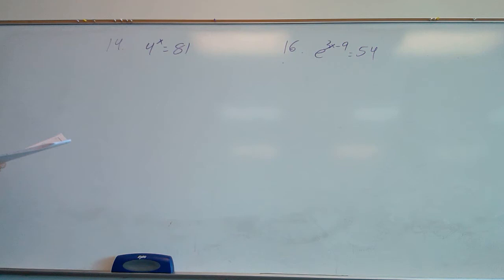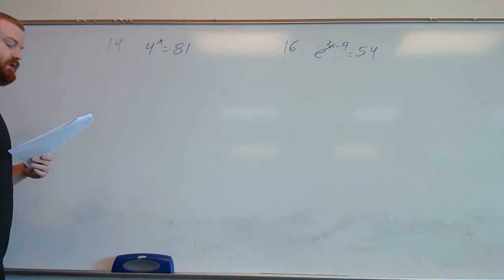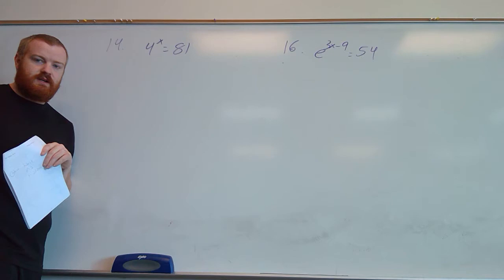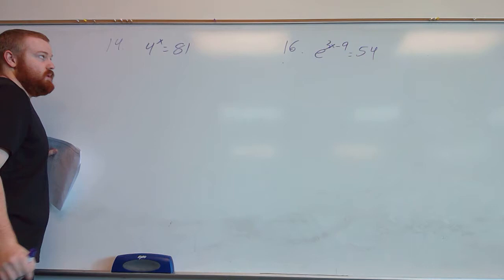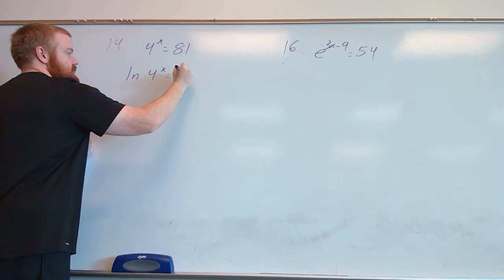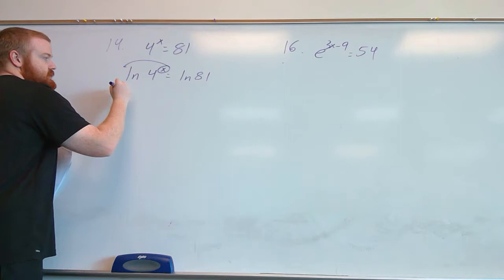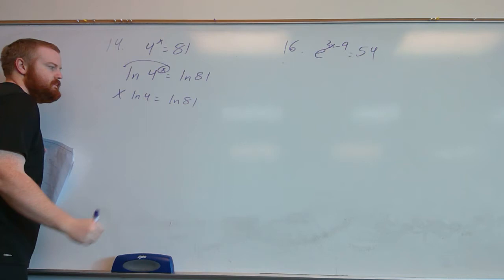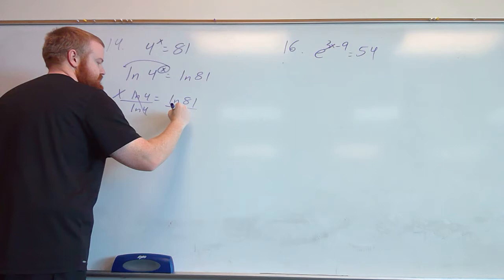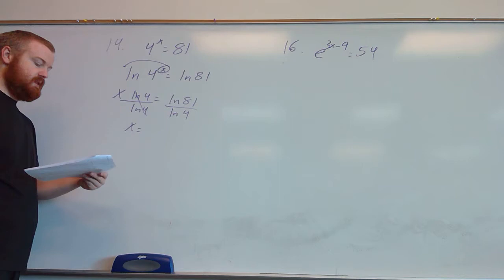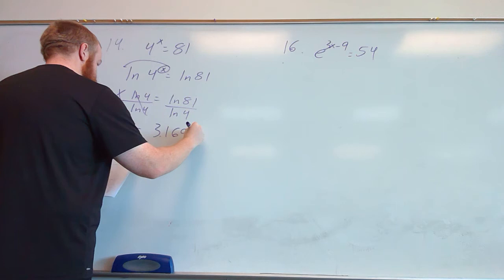The next group asks us to solve each equation using logs or natural logs — we'll do examples 14 and 16. For example 14, since the base is not e, we can use regular log or natural log; I'll use natural log. We take the natural log of both sides to get rid of the exponent, then bring the power x out to the front: x times ln(4) equals ln(81). Dividing by ln(4) gives us ln(81) divided by ln(4). Plugging that into the calculator gives approximately 3.1699.